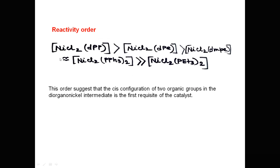The order of Kumada coupling reactions depends on the ligand. This order suggests that the cis configuration of two organic groups in the diorganonickel intermediate is the first requisite of the catalyst.